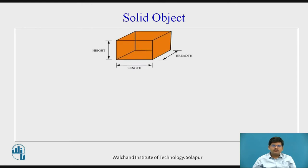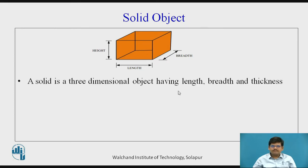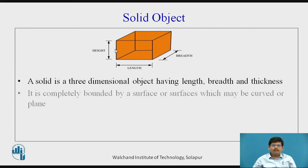What is a solid object? A solid object is an object which has length, height and breadth. A solid object is a three-dimensional object having length, breadth and thickness. It is completely bounded by surfaces which may be curved or plain. As you can see on screen, there are six surfaces for this — here we have plain surfaces.